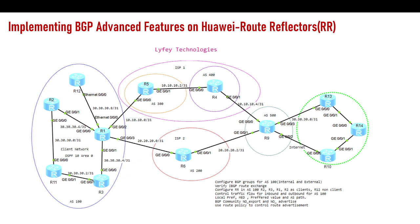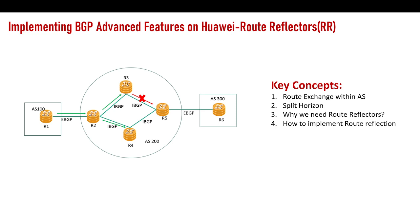Before we dive into the lab, we need to understand some concepts about BGP. BGP has to exchange routes. If you are running BGP within an AS — the autonomous system, which is a network managed or owned by one organization — there should be route exchange between different routers. BGP has a concept called split horizon, which states that if an iBGP peer learns a route from an iBGP peer, that route will not be advertised to any other iBGP peer.